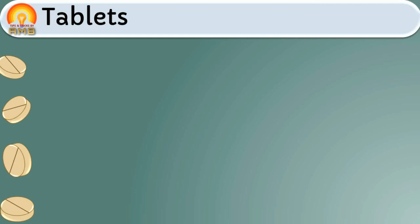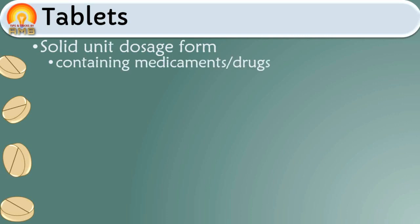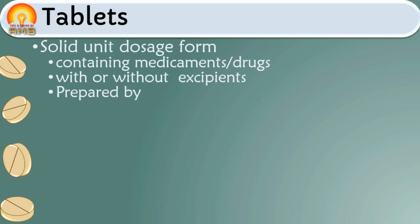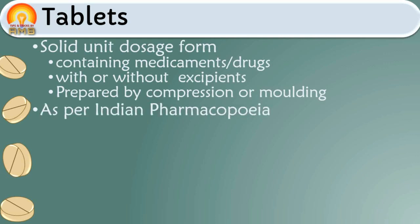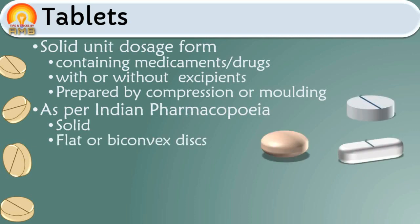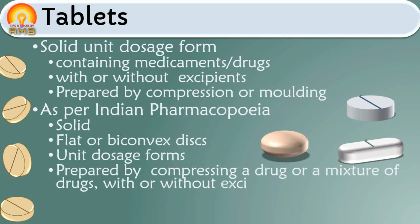Hence, understanding the processing of tablets is very important. Tablets are solid unit dosage forms containing medicaments or drugs with or without excipients, prepared by compression or molding method. As per the Indian Pharmacopoeia, tablets are defined as solid flat or biconvex discs, unique dosage forms prepared by compressing a drug or a mixture of drugs with or without excipients.